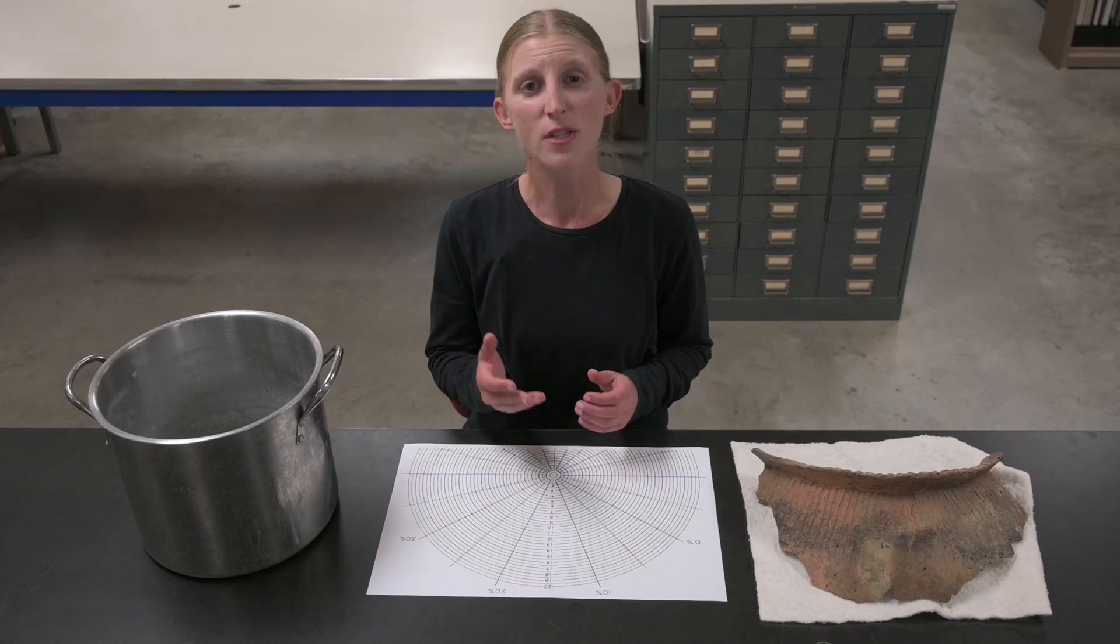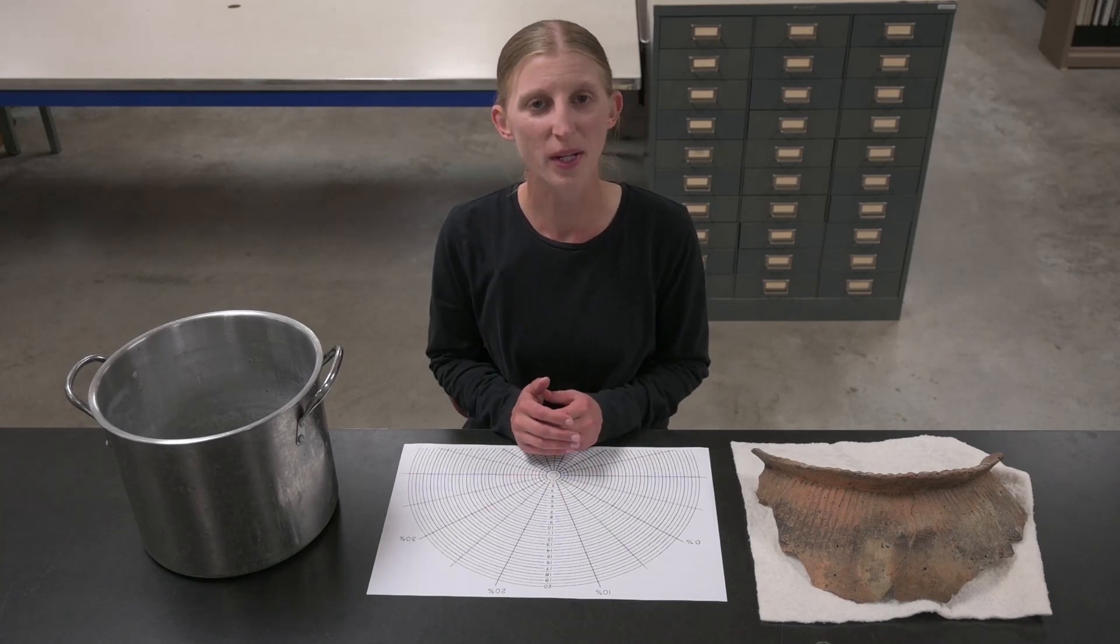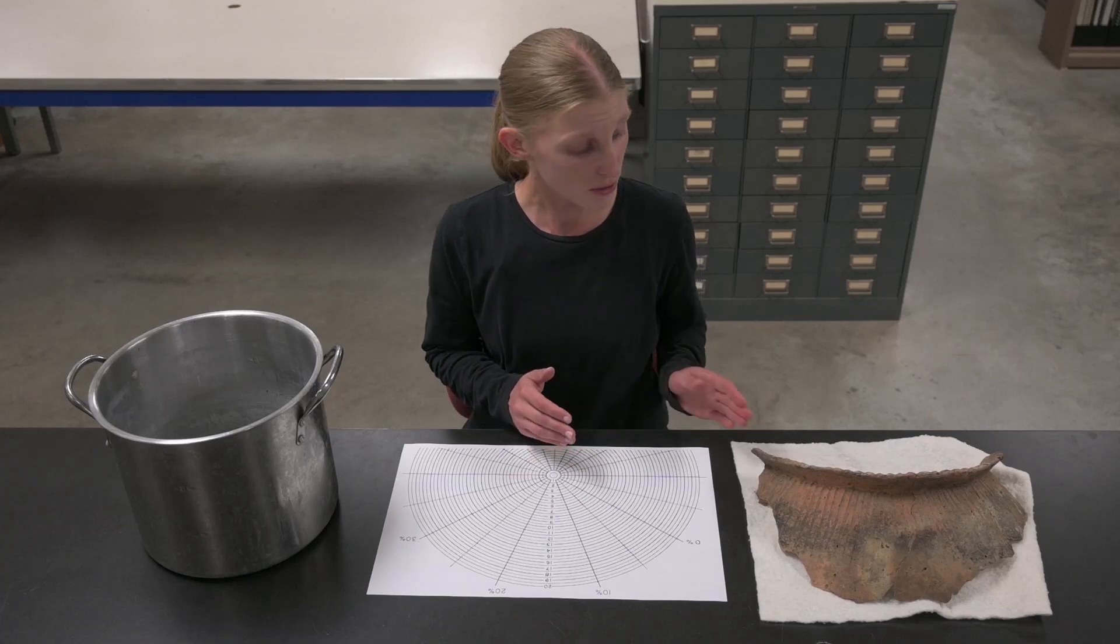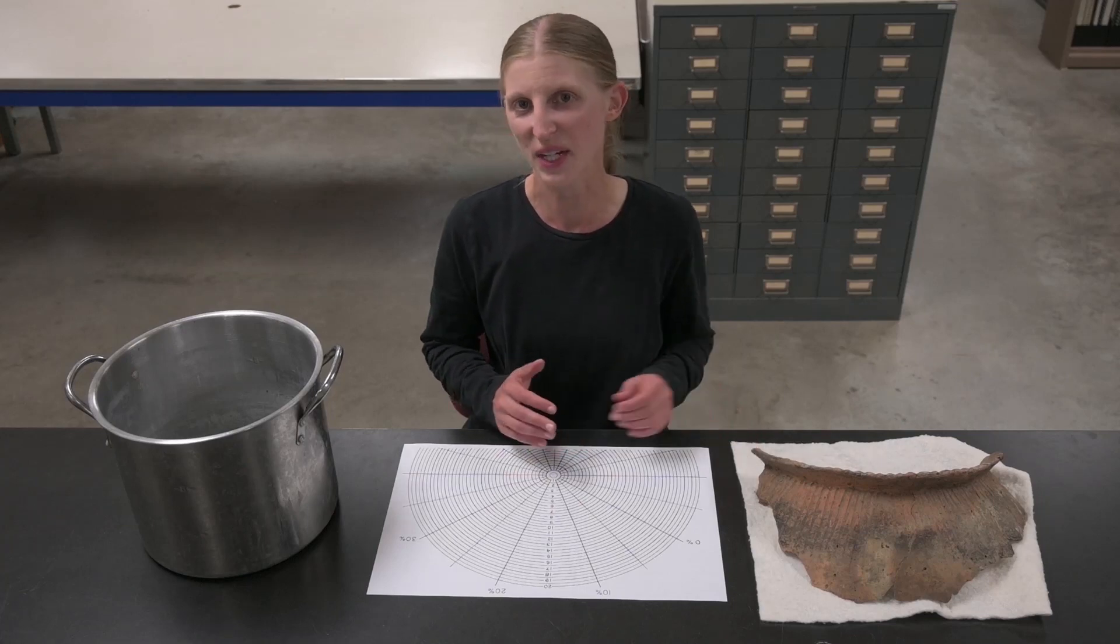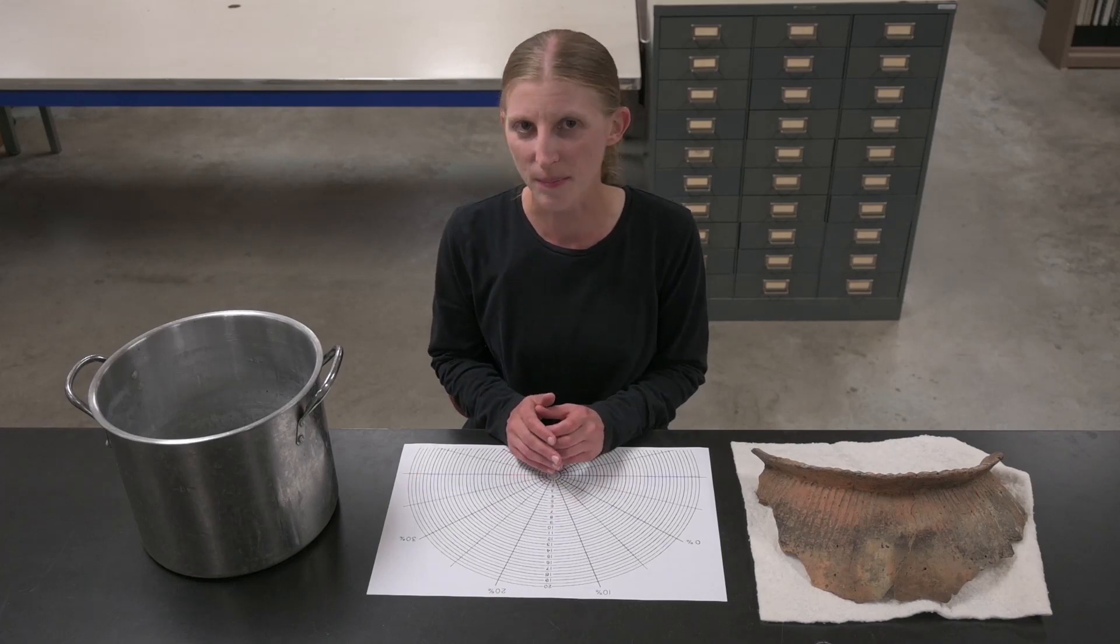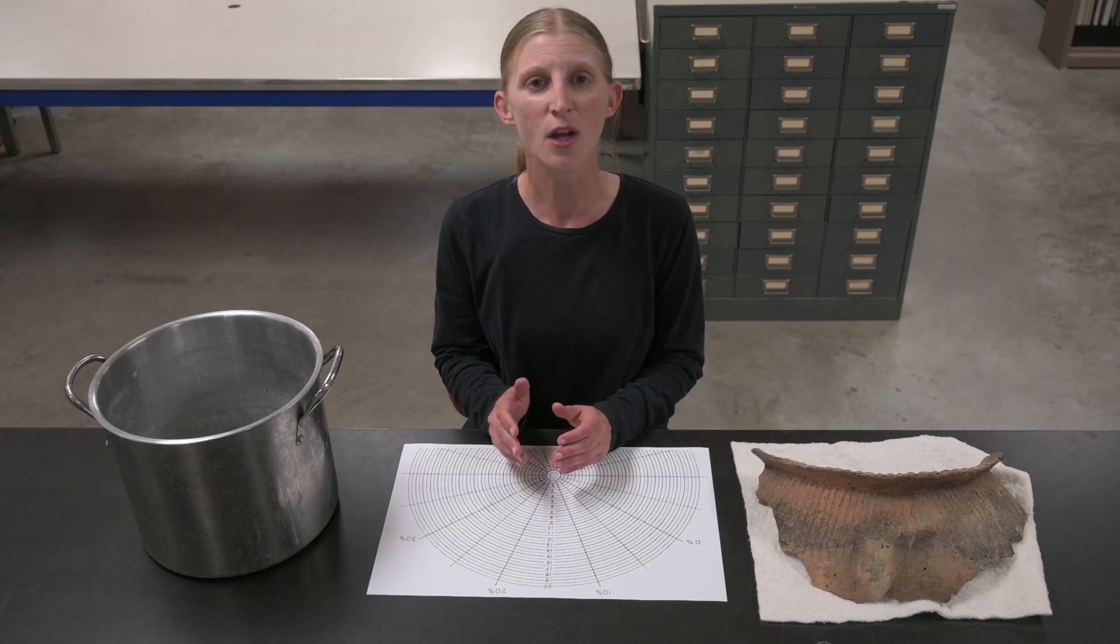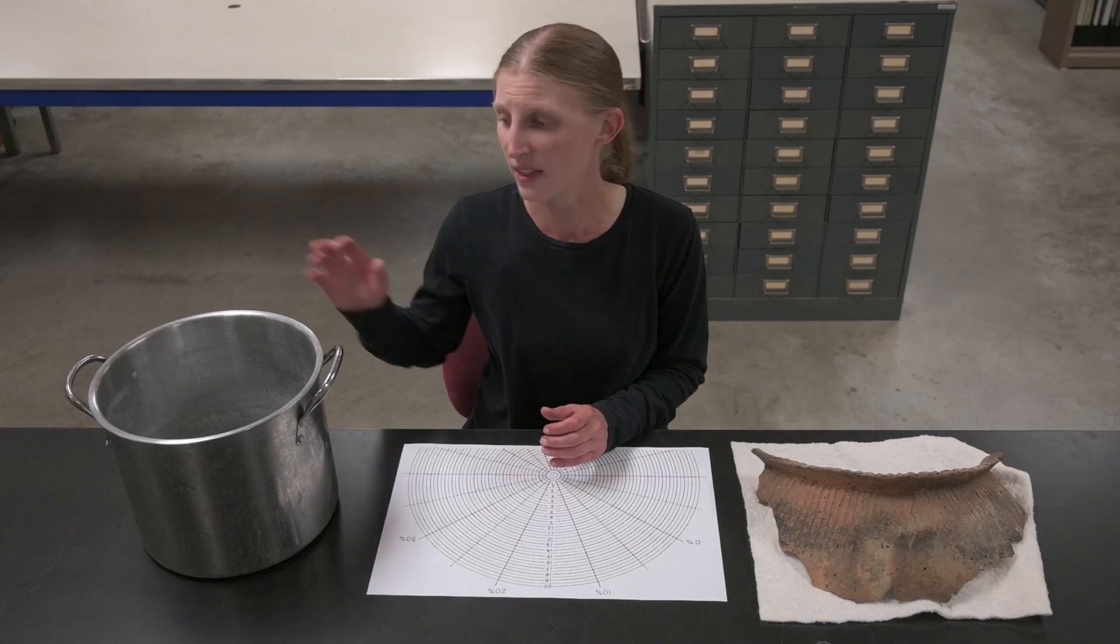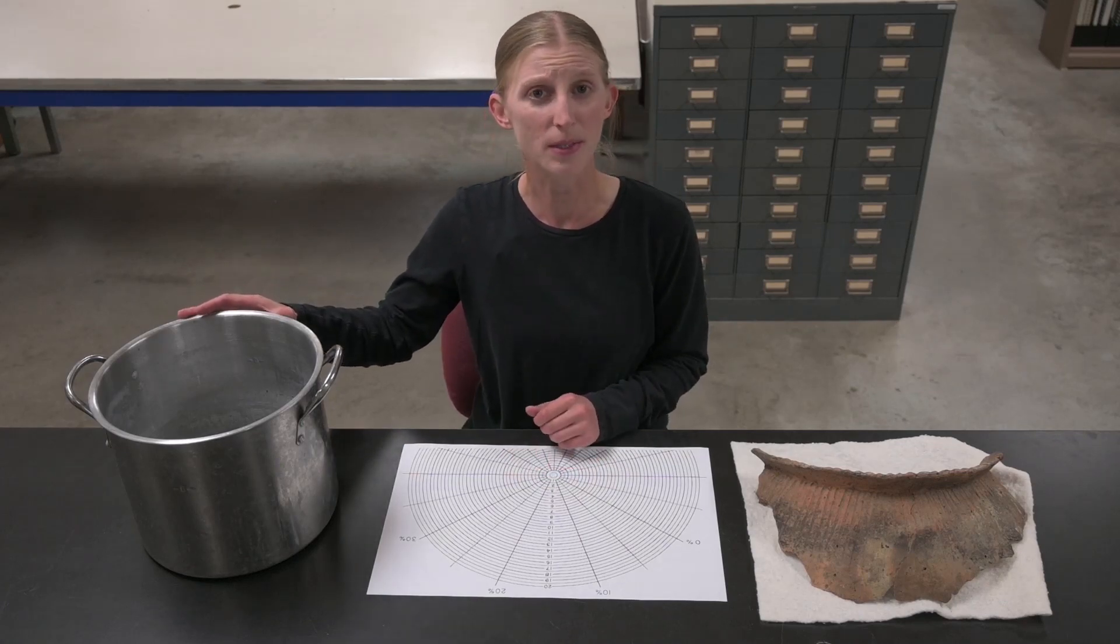And we can use this same technique to estimate the radii of more fragmentary rims, such as those of the woodland and oneota vessels we study here at MBAC. These tend to be quite a bit bigger than a teacup, and oneota pots are often large enough to hold many gallons, more like this stock pot or a cauldron.